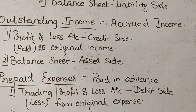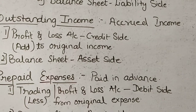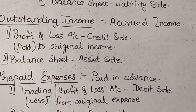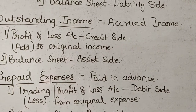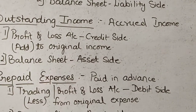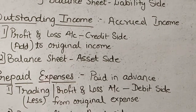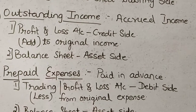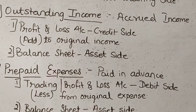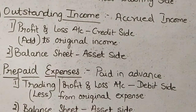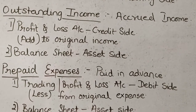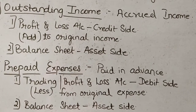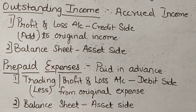The effect of outstanding income will be in your profit and loss account credit side, since incomes are recorded on the credit side. We add the outstanding income on the credit side to the original income. And since we are going to receive this income in the coming days, it becomes an asset of the business and is therefore recorded on the balance sheet asset side.